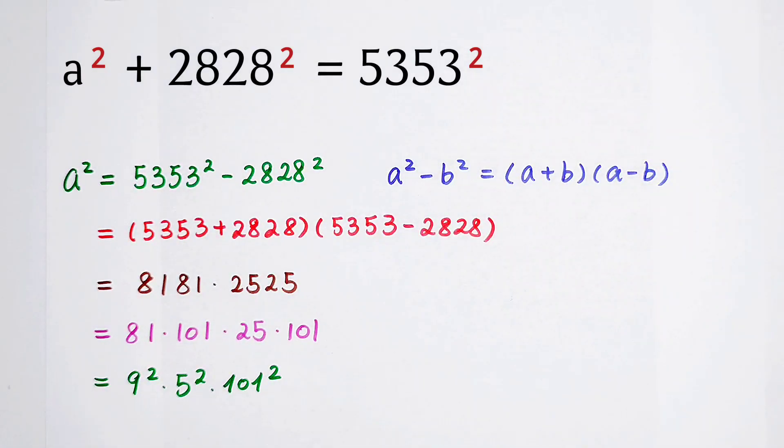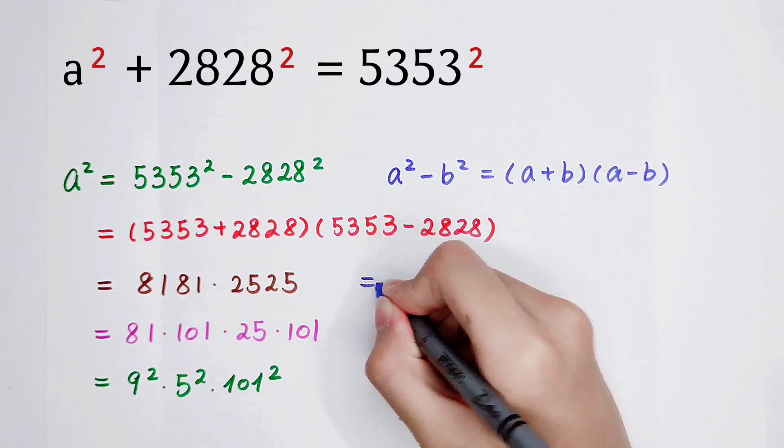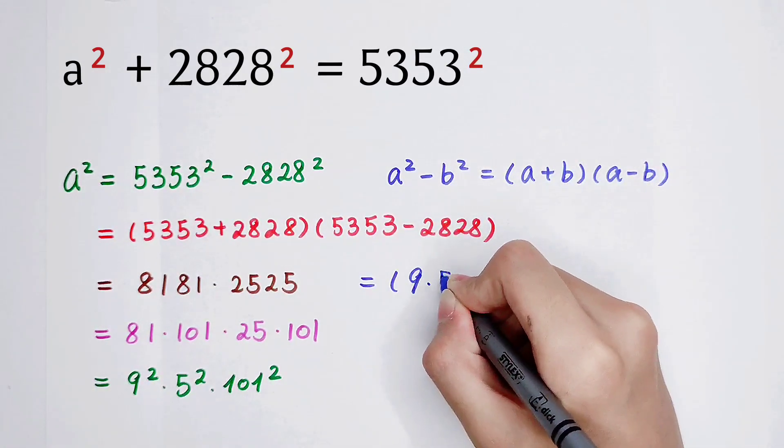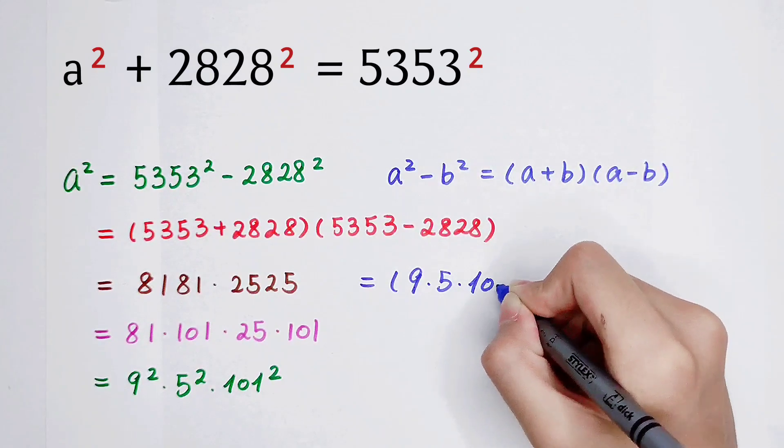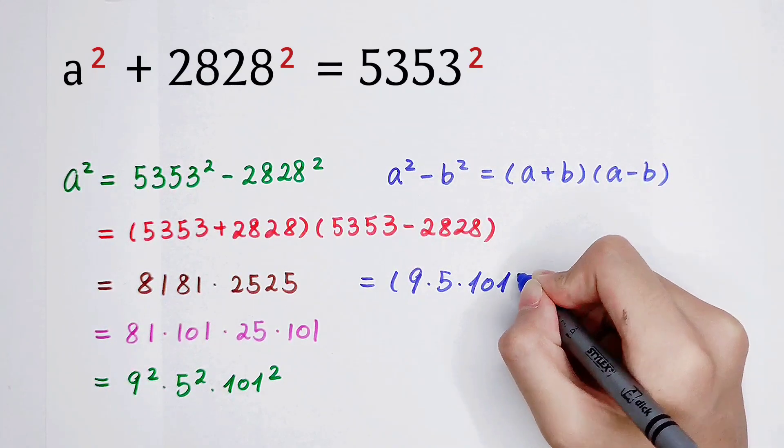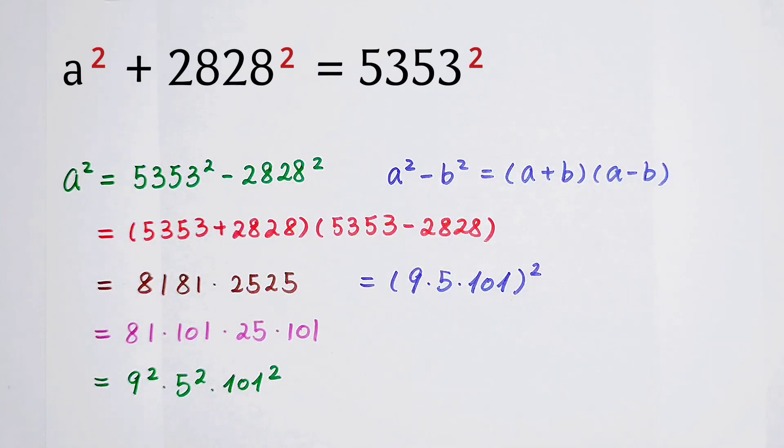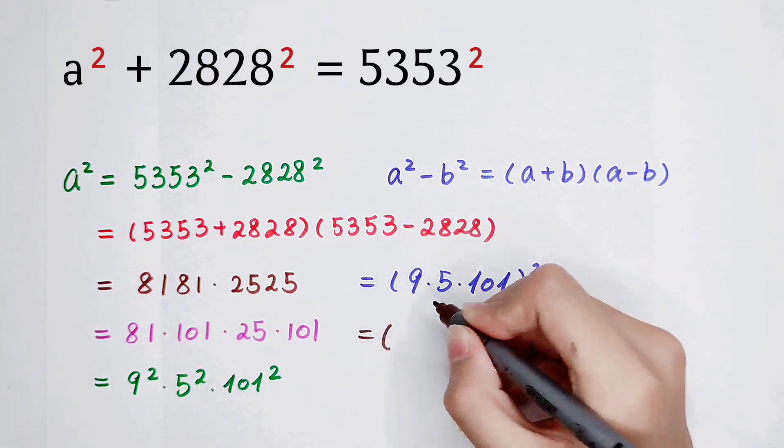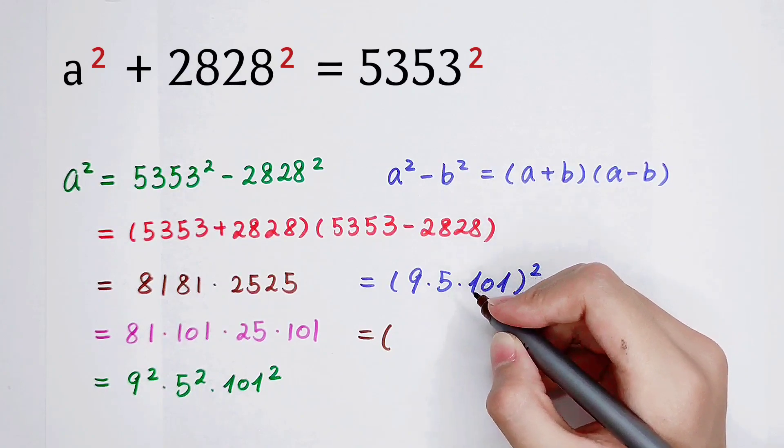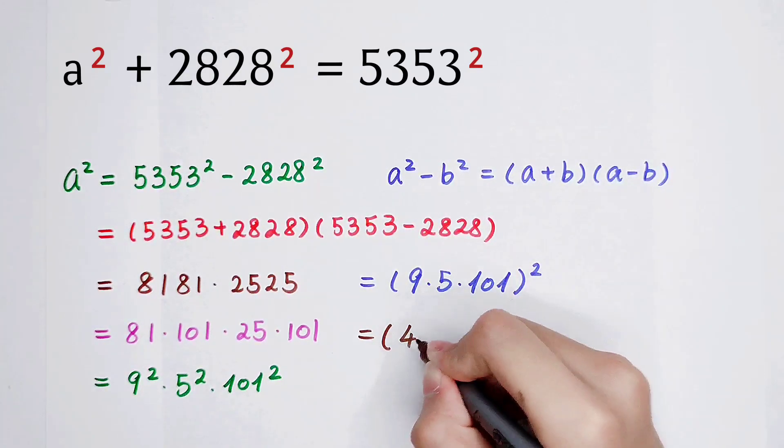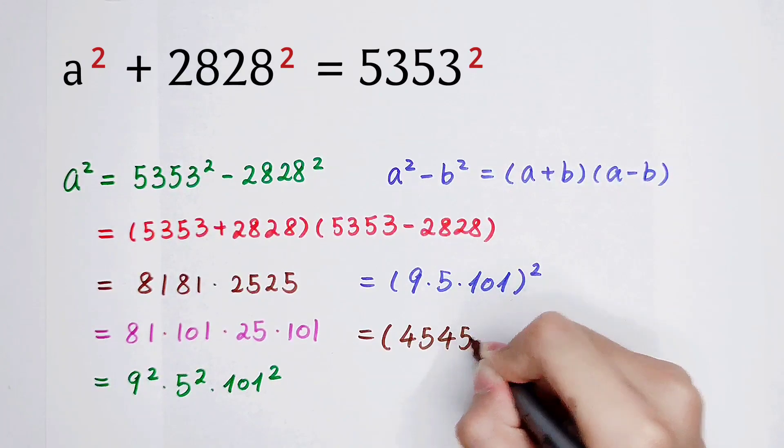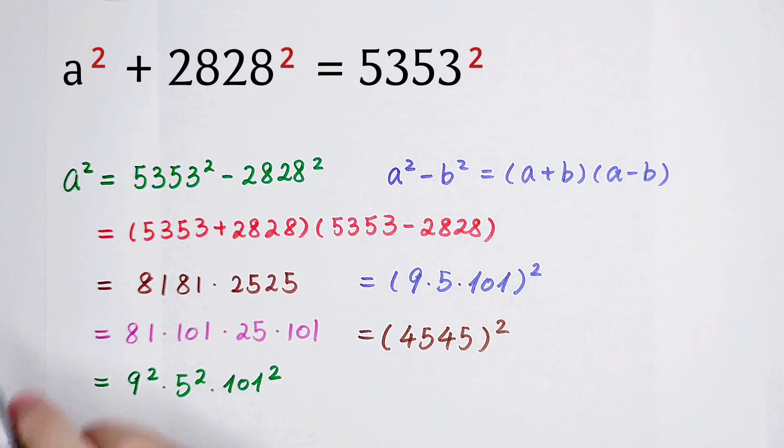So this is what? 9 times 5 is 45, then times 101 is (45 times 101)², which equals 4545². Because a² is this, we can get the value of a.